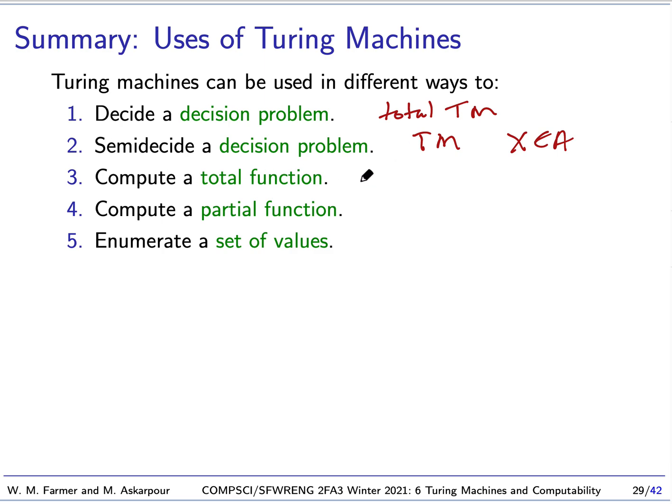And we just saw a moment ago that we can have Turing machines that compute total and partial functions. The typical way of computing a partial function is that the function loops when the value is undefined. Otherwise, it will produce a value on the tape and accept it. And we also talked about how you can use Turing machines to enumerate a set of values.